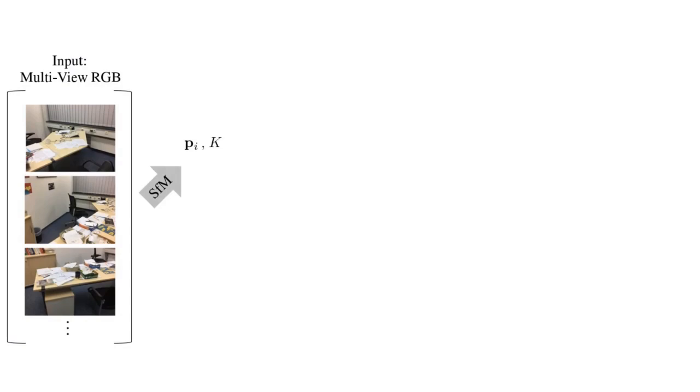Given a small set of images of a room, we run structure from motion to obtain camera parameters. At the same time, structure from motion produces a sparse reconstruction. Our idea is to use this freely available depth information to guide the NeRF optimization.